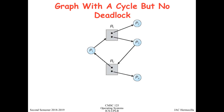In the second graph, you see a cycle, but it does not necessarily mean there is a deadlock in this system. At some point in time, P4 will release this instance, thereby granting P3 access to it. The deadlock will not happen because P4 is not waiting for any other resource. After it completes its operation using this resource, it will release it, and P3 can get hold of this resource instance.